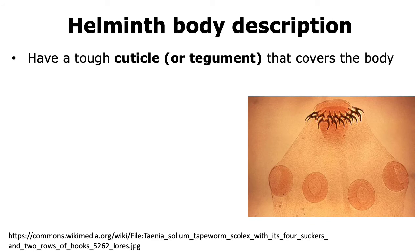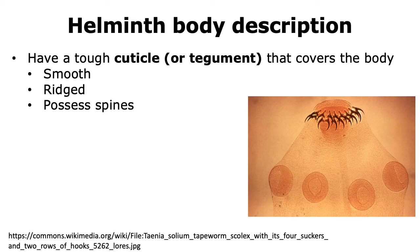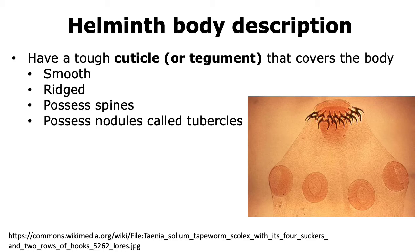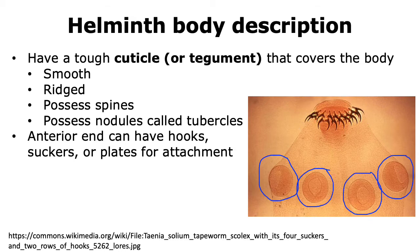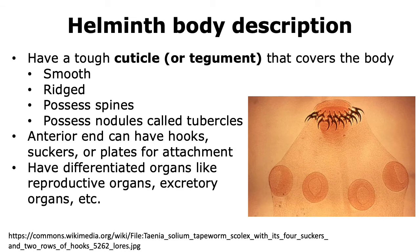Helminths are invertebrate animals, and hence their cells lack a cell wall. They have a tough cuticle or tegument that covers the entirety of their body to offer protection. This cuticle can be smooth or rigid, or it can possess spines or even have nodules called tubercles, depending on the type of helminth. On the anterior end, helminths can have attachments like hooks, or they can even have suckers or plates that aid in attachment. They have different organs like reproductive organs, respiratory organs, and excretory organs, and thus they do have a developed body plan.